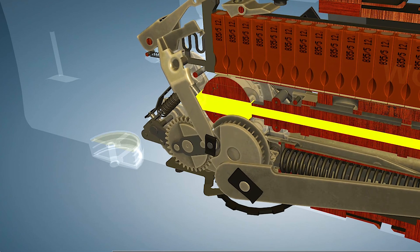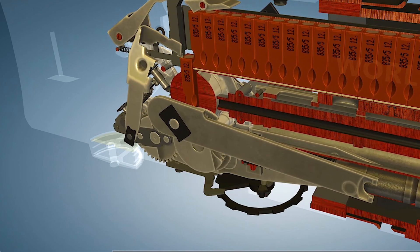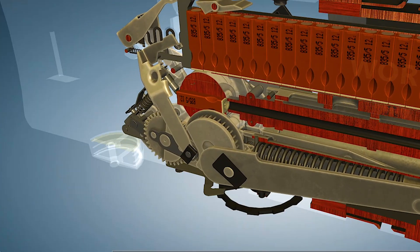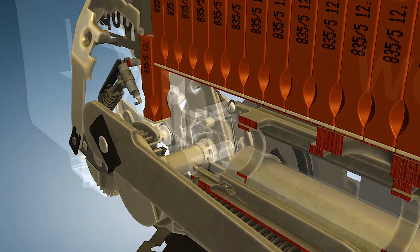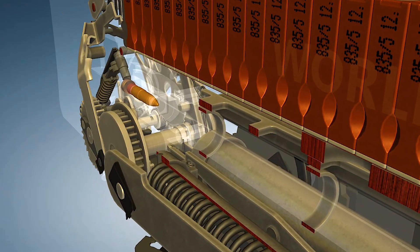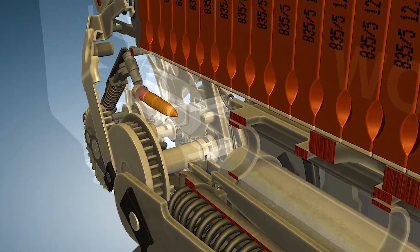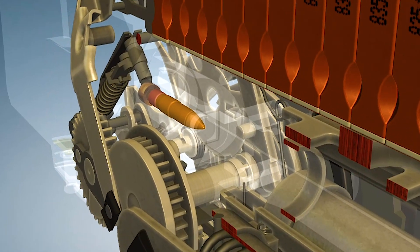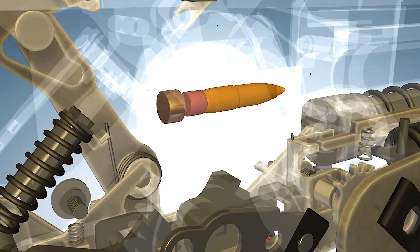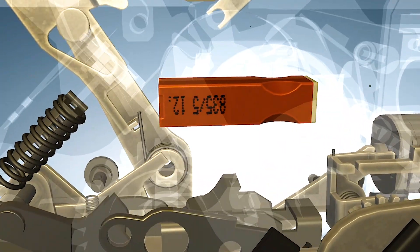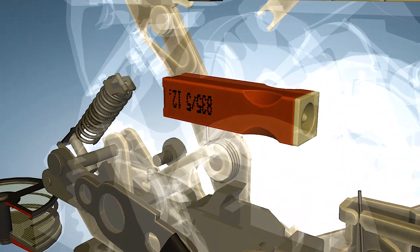Imagine a rifle that fires without the extra weight of brass casings. Sounds like something out of a sci-fi movie, right? But that was exactly the promise behind the HKG-11. Developed by Heckler and Koch during the 1970s and 80s, the G-11 was designed to revolutionize infantry combat using caseless ammunition.